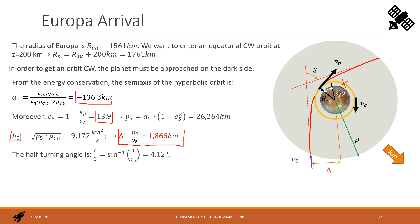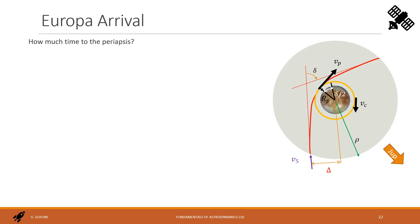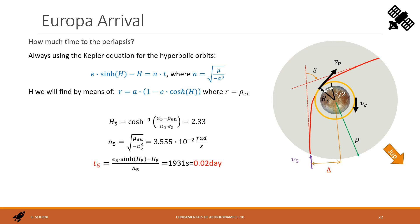Since the eccentricity is so large, the turning angle is very small — only 4.12 degrees. From the Vis-viva equation we calculate the velocity at periapsis, and subtracting the circular speed of the target orbit, we find delta-V5 = 3.86 km/s. With a very similar procedure to the one seen for Jupiter, we get the travel time within Europa's SOI: 1,931 seconds, corresponding to 0.02 days.